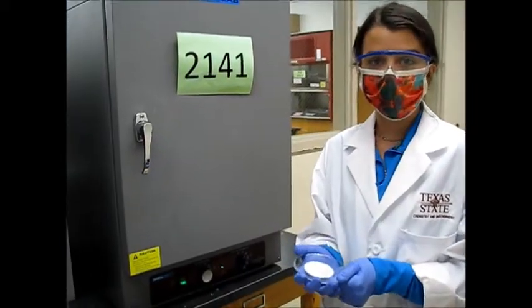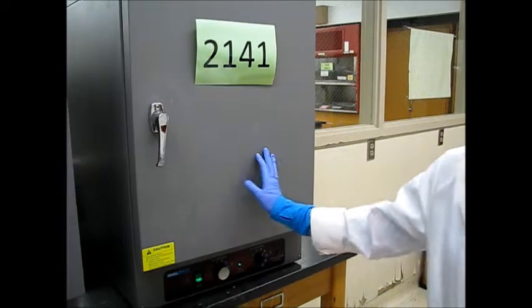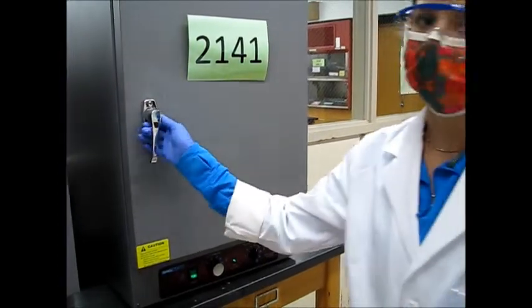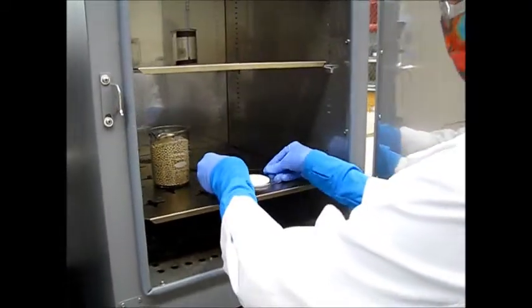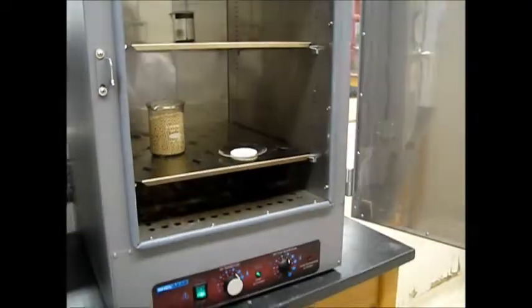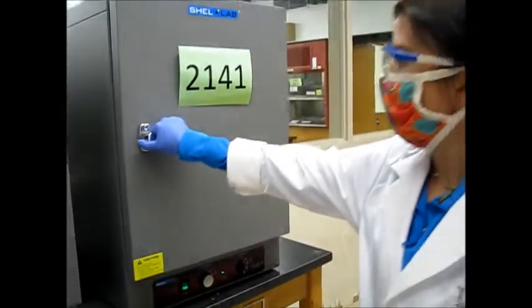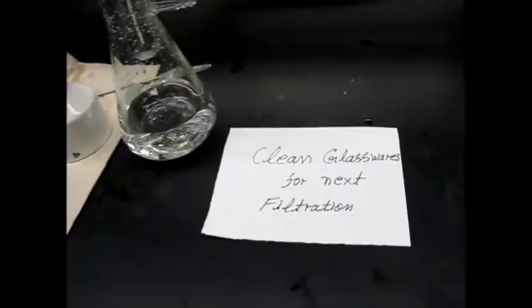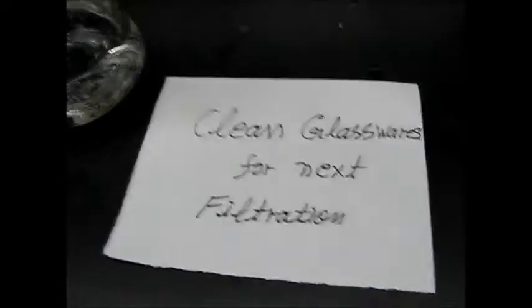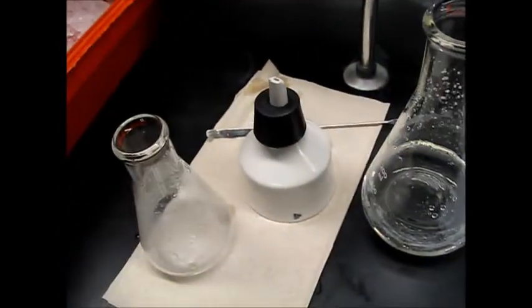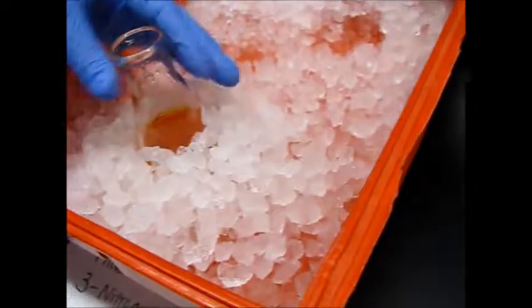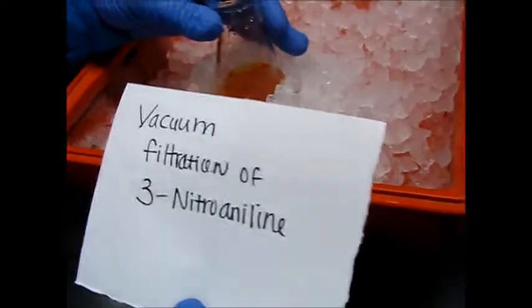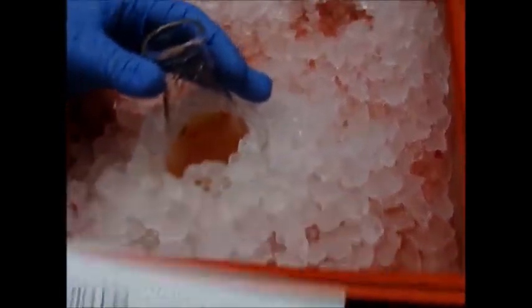Now we will take our benzoic acid filter paper and place it in the oven labeled 2141 which is our lab. Open the handle and place it into one of the divots where it's secure. Come back after 10 minutes and make sure you close it tightly. So now we have to clean all these glass wares, our filtration assembly, for the next step. Next filtration which is our 3-nitroaniline.